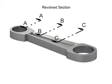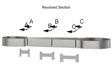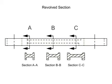Removed sections are actually revolved sections that are moved to another location on the drawing. Removed sections are used when a part, such as this connecting rod, changes in cross section from one point to another.